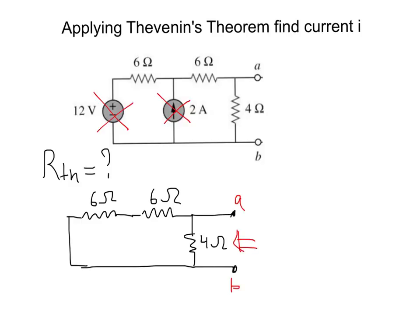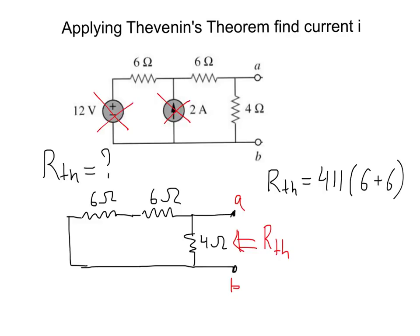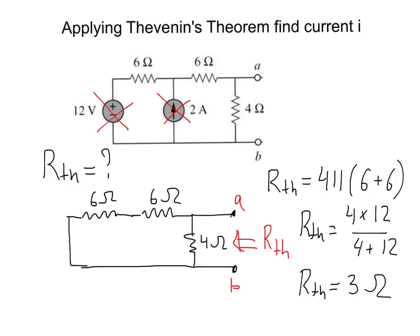Looking into the circuit from the right to find RTH: the 4 ohm resistor is connected in parallel to the two 6 ohm resistors. Those two 6 ohm resistors are in series with each other, giving 6 plus 6 = 12 ohms. So RTH = 4 in parallel with 12, which equals 4 times 12 over 4 plus 12, giving RTH = 3 ohms. So the first equivalent parameter, Thevenin resistance, is 3 ohms.